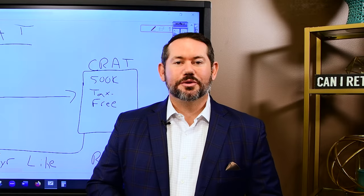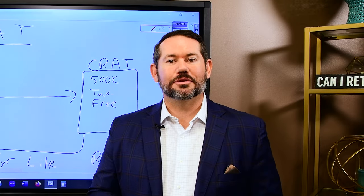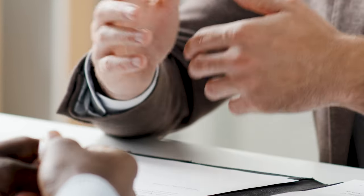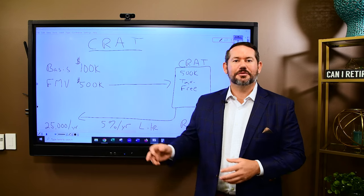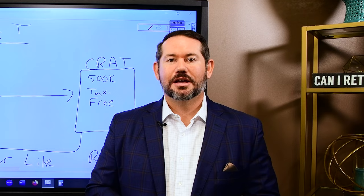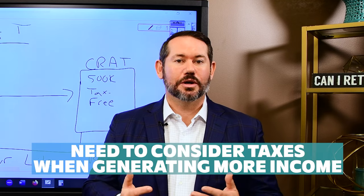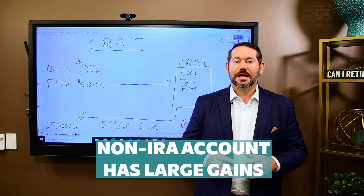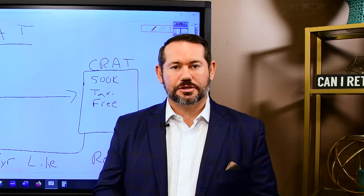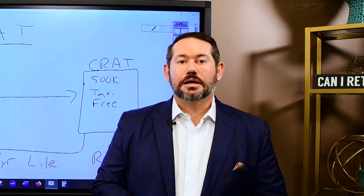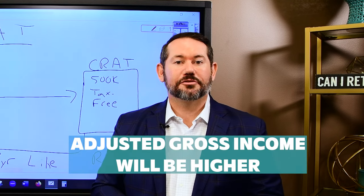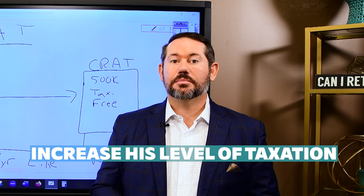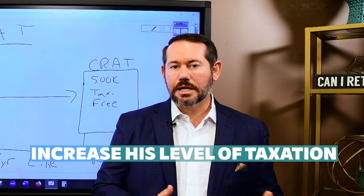I have a CPA as a client and we were doing some tax planning on one of his recent reviews. He says, 'Troy, I think I want to spend a little bit more income — do we have enough, is it going to be okay?' So we pull up the software, start modeling different levels of income, and get into the tax planning discussion. He already has a Roth conversion plan in place, but his non-IRA account has some pretty big gains. If we sell those stocks to create more income, our adjusted gross income is going to be higher, possibly requiring us to alter the Roth conversion plan, and most definitely increasing his level of taxation.